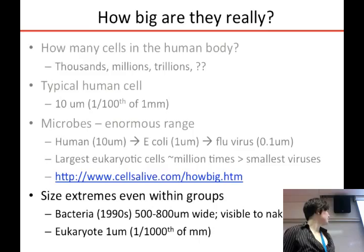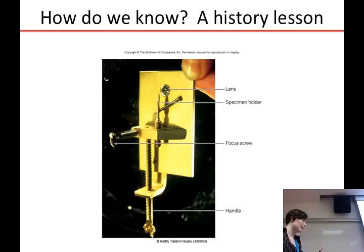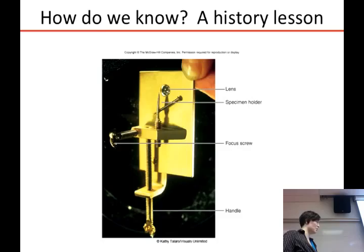There's quite a size range even within groups. Bacteria have been found, surprisingly in the 90s, that are nearly a millimeter in size and can be seen by the naked eye. Whereas there are some eukaryotic cells, which normally are 10 microns, that are actually a tenth of that size — about the size of a bacterial cell.